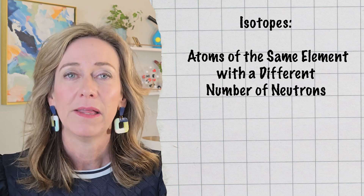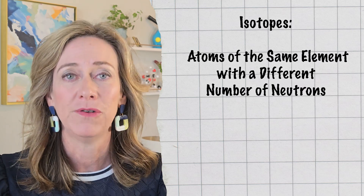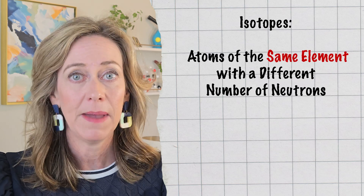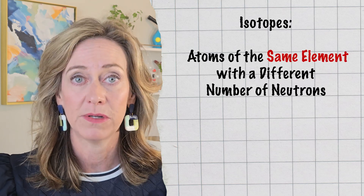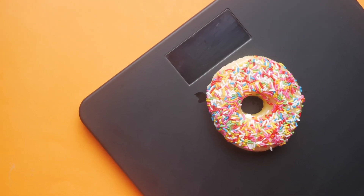Now let's switch gears and talk about isotopes. These are atoms of the same element but with a different number of neutrons. Keep in mind, they're the same element, so they have the same number of protons. Think of it like two identical donuts — one is filled with jelly and the other is plain. They look the same on the outside, but their inner contents, their mass, is different. It's the same idea with isotopes.